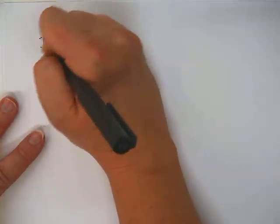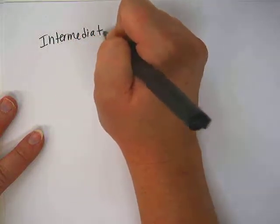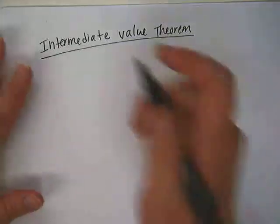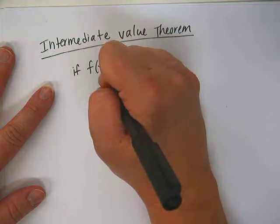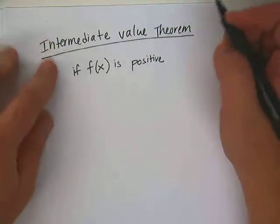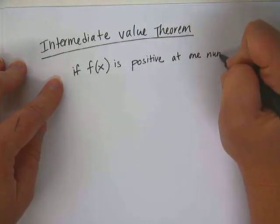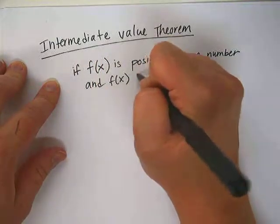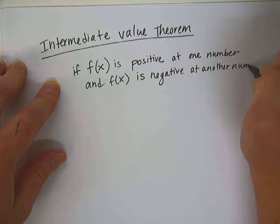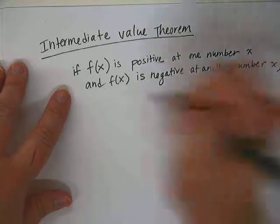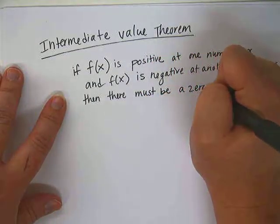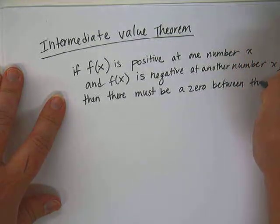The last thing for section 5.5 is called the intermediate value theorem. And what the intermediate value theorem says is, if f of x is positive at some number and f of x is negative at another number, then there must be a 0 between the two numbers.